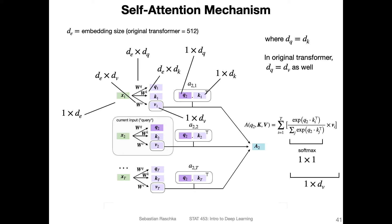To clarify the dimensions: x_i is a word embedding vector of dimension e. In the original 'Attention Is All You Need' paper they used 512 as the embedding size, though this is a hyperparameter. The weight matrices W_Q, W_K, and W_V have e rows, with output dimensions dq, dk, and dv respectively. In the original transformer paper, dq equals dk — which is necessary for the dot product — and dq also equals dv.